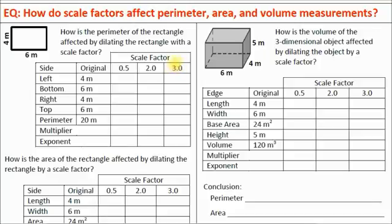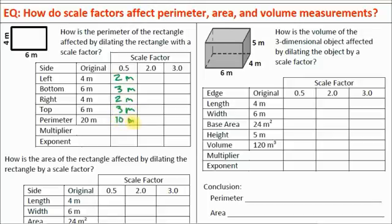We're going to scale it by 0.5, by 2, and by 3. The 0.5 is a reduction; 2 and 3 will be enlargements. We expect the perimeter to get smaller for 0.5 and larger for 2 and 3. The original left side was 4 meters. 4 times 0.5 gives a new left side of 2 meters. 6 times 0.5 gives a new bottom of 3 meters. The right is 2 meters and the top is 3 meters. Adding those up, we get a total perimeter of 10 meters.